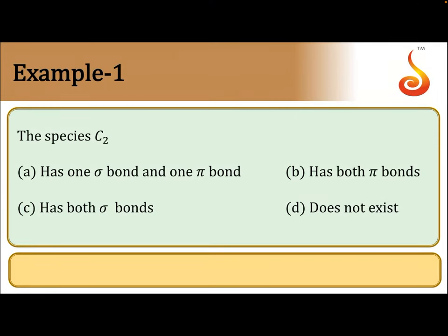The species C2 has: 1 sigma bond; 1 pi bond; has both pi bonds; or has both sigma bonds — does not exist.